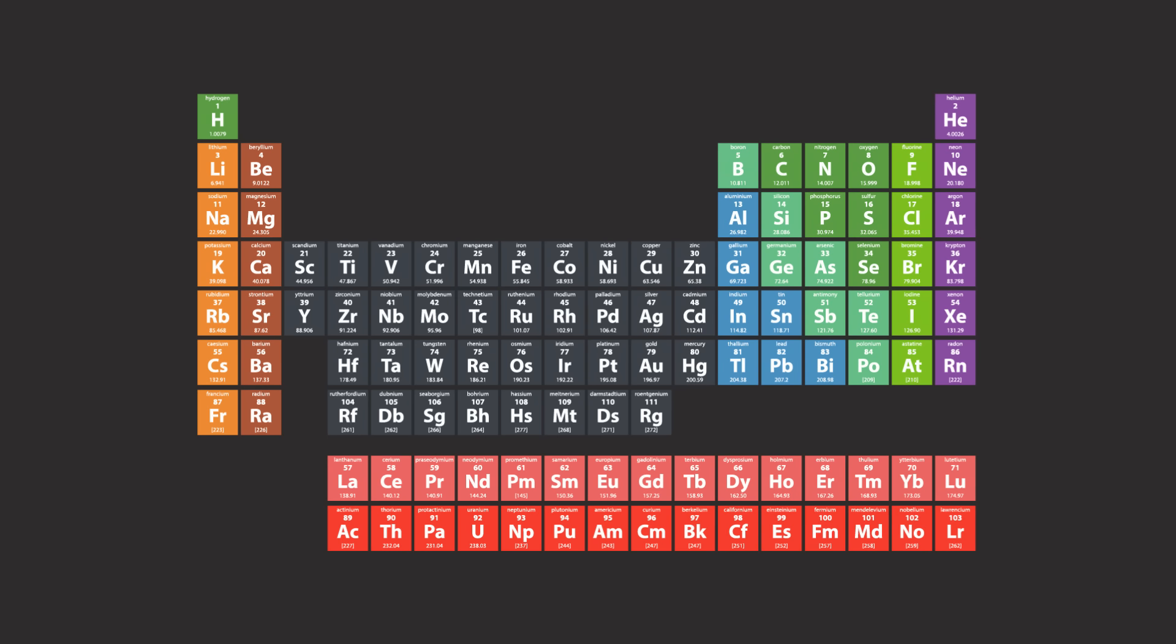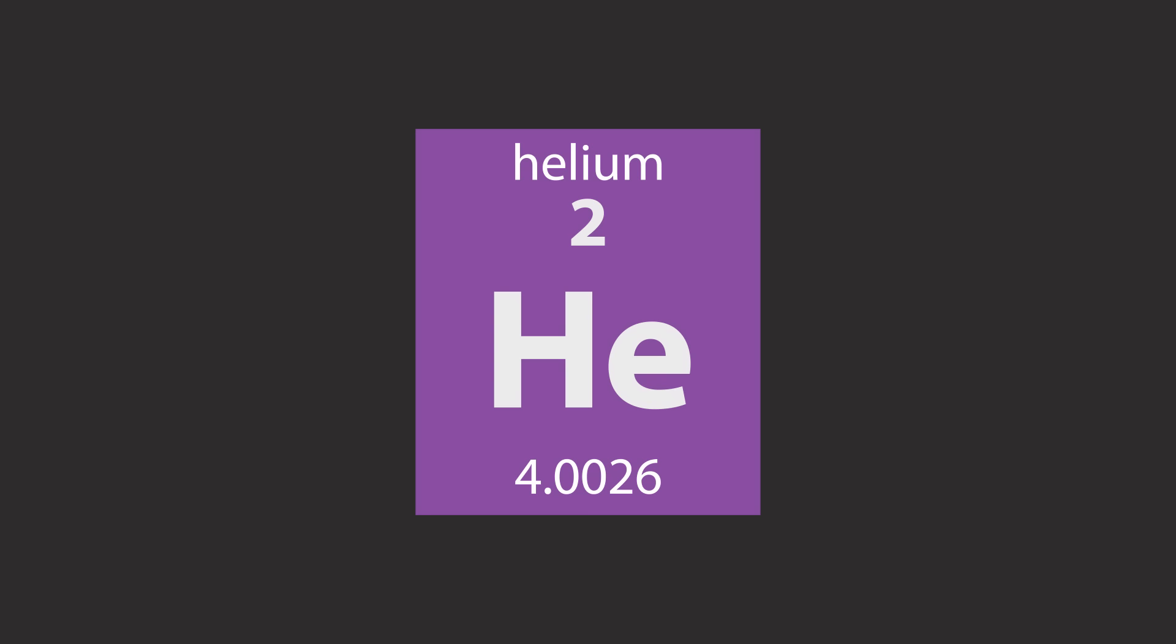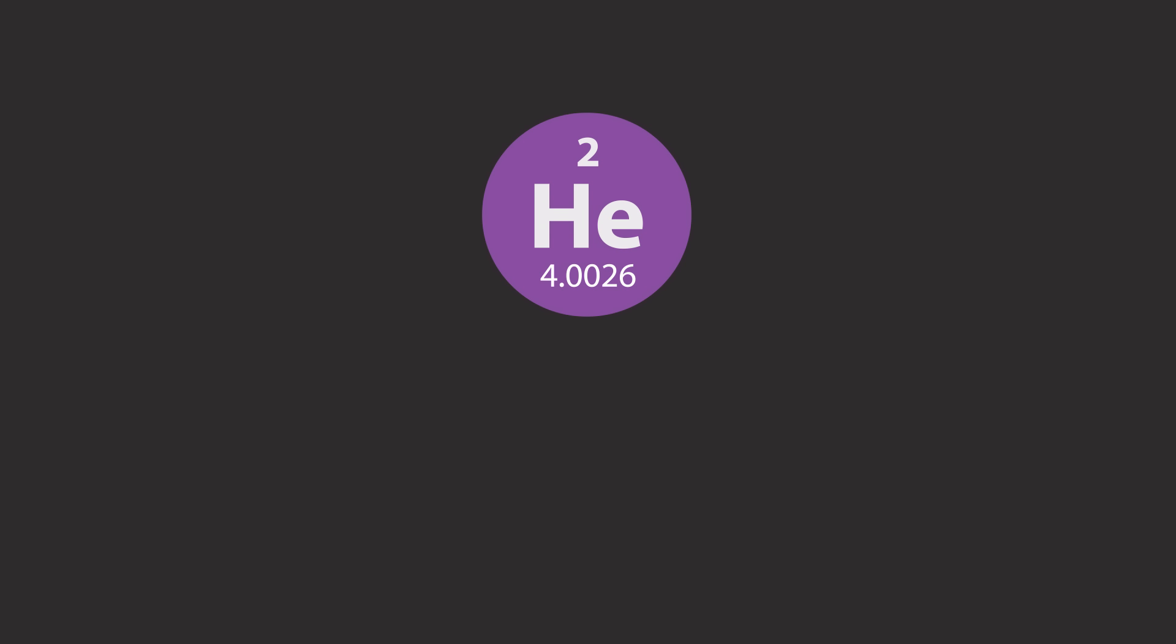Each element on the periodic table is represented with its atomic number and its atomic weight. The element's atomic number, represented here by the smaller value,